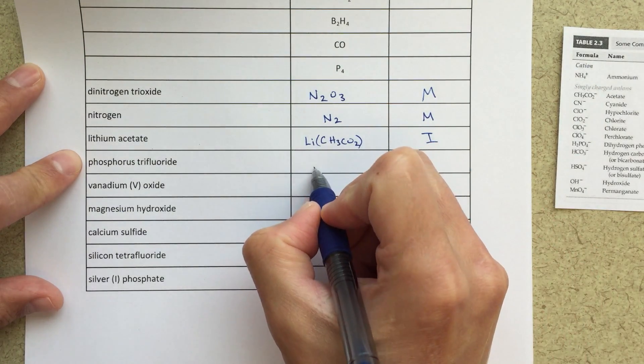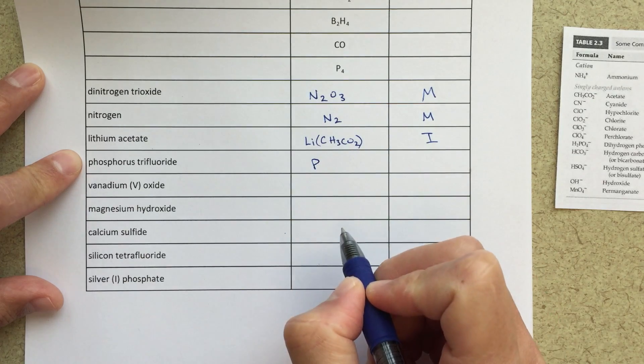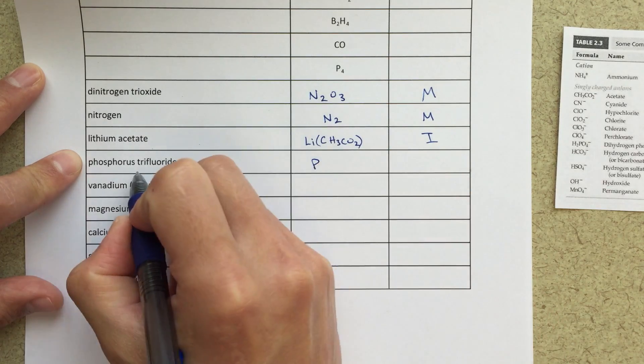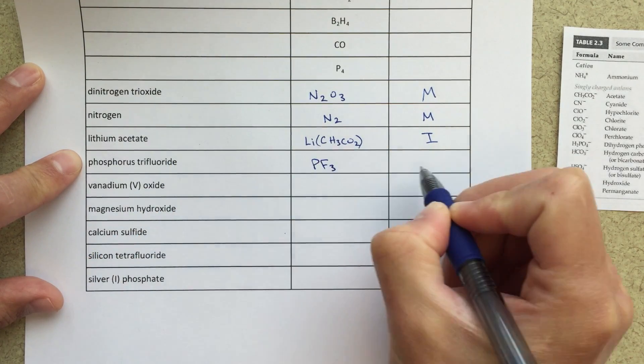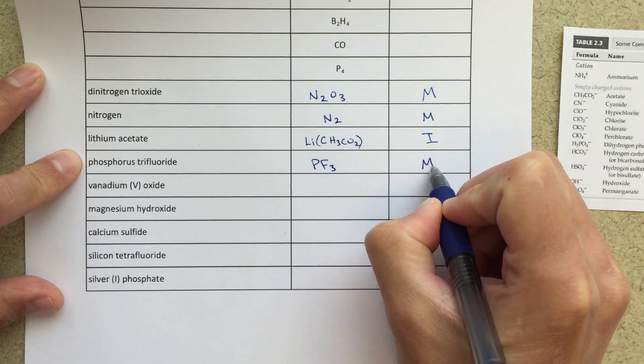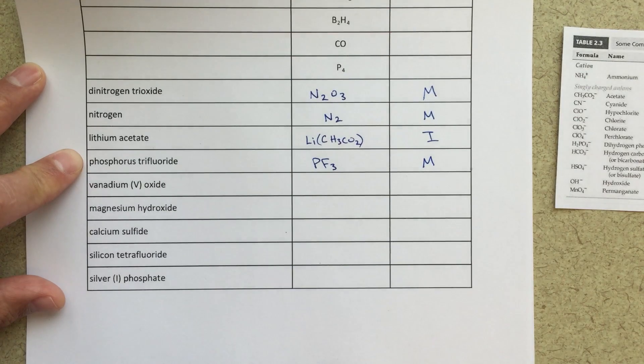Phosphorus trifluoride: phosphorus is P, trifluoride is F3. This is going to be a molecular compound.